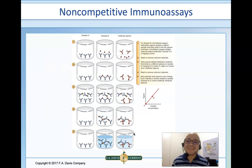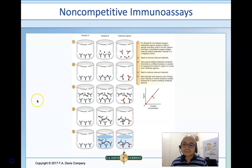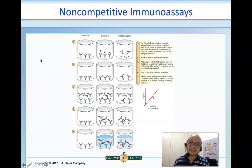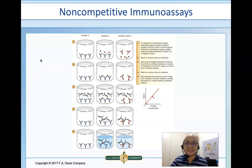Looking at the illustration, we again have Sample A and Sample B. Sample A is an example of a negative control, while Sample B is an example of a patient that is positive for a certain analyte. Let's compare them step by step.